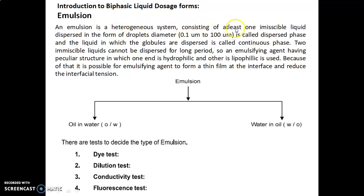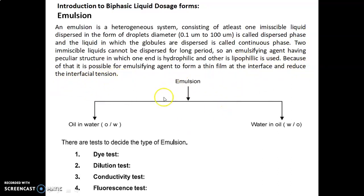An emulsion is a heterogeneous system consisting of at least one immiscible liquid dispersed in the form of droplets with a diameter of 0.1 micrometer to 200 micrometers, called the dispersed phase. The liquid in which the globules are dispersed is called the continuous phase. Since two immiscible liquids cannot be dispersed for a long period, an emulsifying agent — having one hydrophilic end and one lipophilic end — is used to form a thin film at the interface and reduce interfacial tension.